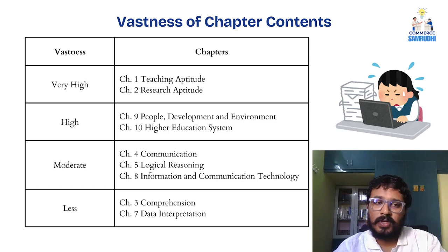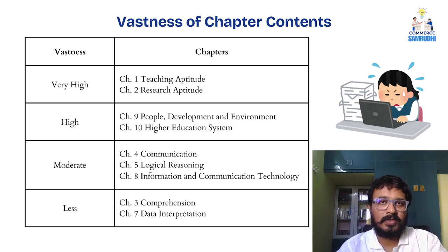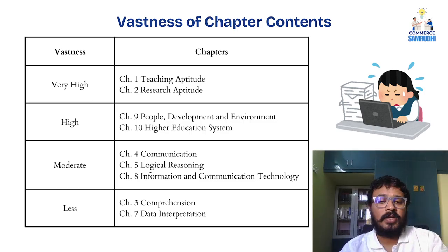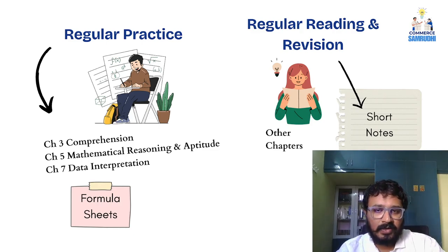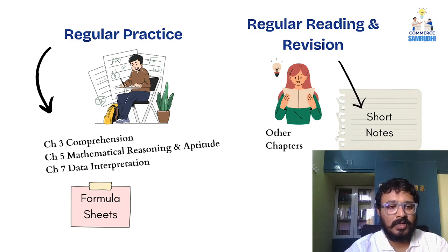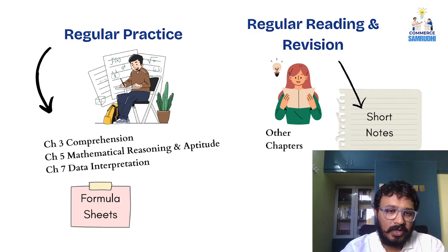It is easy to score also. Content is less and the weightage is equal — five questions, ten marks each. You can easily score from these areas. You have to practice these three chapters regularly: Chapter 3 Comprehension, Chapter 5 Mathematical Reasoning and Aptitude, and Chapter 7 Data Interpretation.